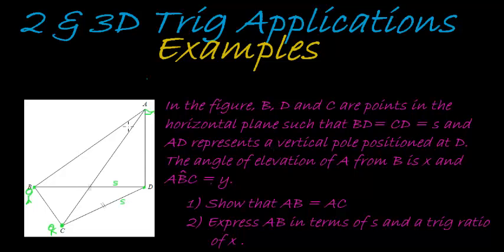AD represents a vertical pole positioned at D on the field. The angle of elevation of A from B — in other words, the angle that person at B has to elevate his head upwards to see point A — is X degrees. And the angle ABC is equal to Y: that's the angle between the rope going up to the pole and the rope going across to the friend.